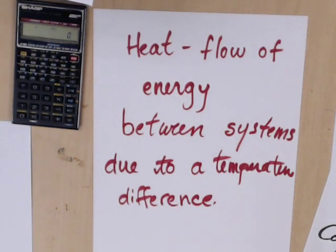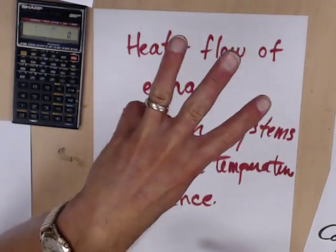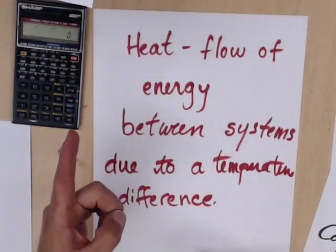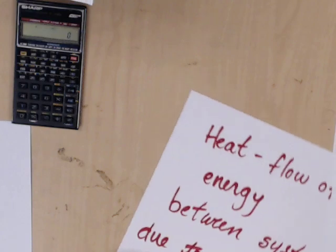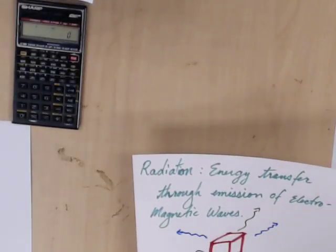Heat is the flow of energy between two systems due to a temperature difference. And there are three ways that you can get the heat from one side to the other. The first one is radiation.